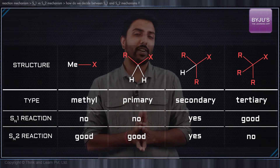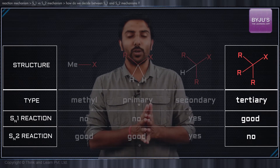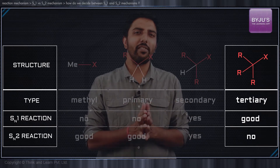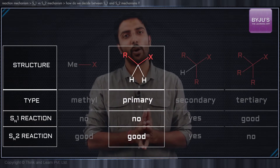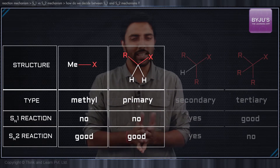Whenever we have a tertiary substrate, the mechanism is always going to be SN1. Whenever we have a primary substrate or a methyl substrate, we always choose the SN2. The earliest generalisation is that if a substrate can achieve a reasonably stable carbocation, it always chooses to go via that mechanism.